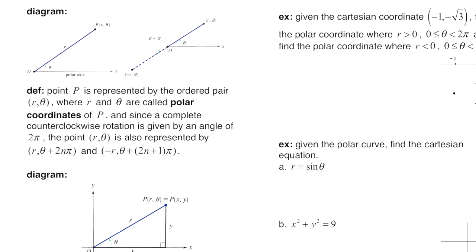If your polar coordinate has a negative r, you still rotate the same theta, but think of it as reflecting the point, or you can think of it as adding pi. So here's our definition: point P is represented by the ordered pair r, theta, where r and theta are polar coordinates of P. Since a complete counterclockwise rotation is given by an angle of 2π, the point r, theta is also represented by r, theta plus 2nπ.